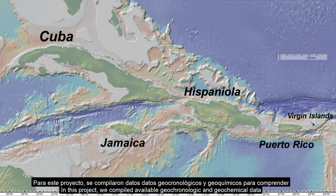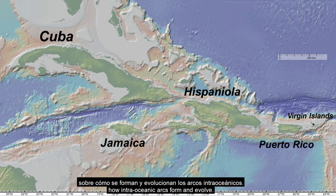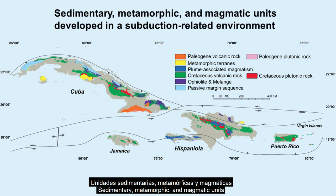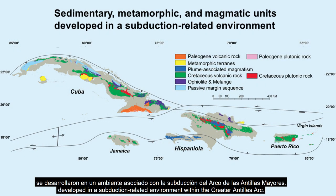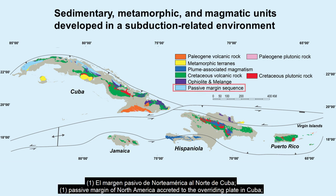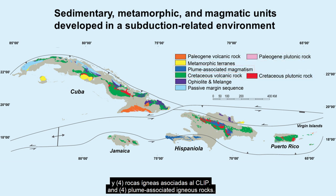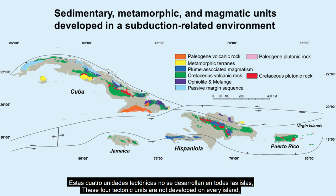In this project, we compile available geochronological and geochemical data to understand what the Greater Antilles Arc can tell us about how intra-oceanic arcs form and evolve. Here we only talk about the age compilation. Sedimentary, metamorphic, and magmatic units developed in a subduction-related environment within the Greater Antilles Arc are well recognized as passive margin of North America, a critical to the overriding plate in Cuba, ophiolite and ophiolitic mélange, Cretaceous and Paleogene magmatic arcs, and plume-associated igneous rocks.